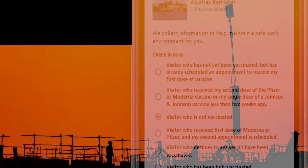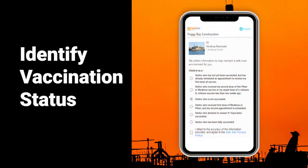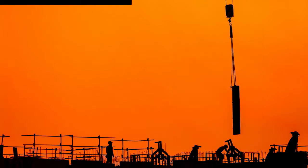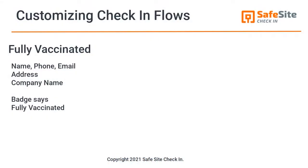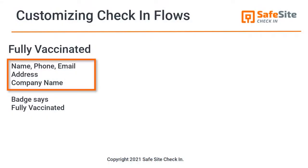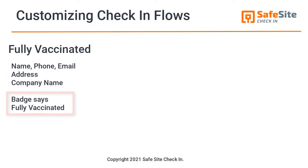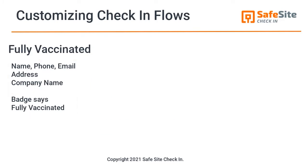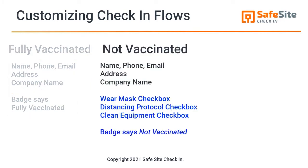The visitor is asked to identify their vaccination status. For example, fully vaccinated, where a visitor simply provides their contact information and any additional information you want, and then displays on the badge that they're fully vaccinated.